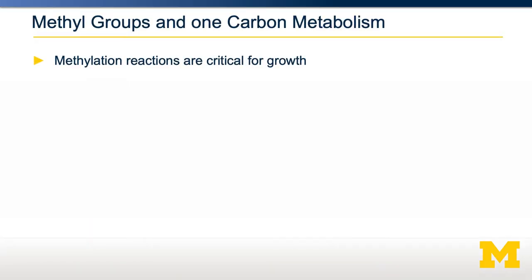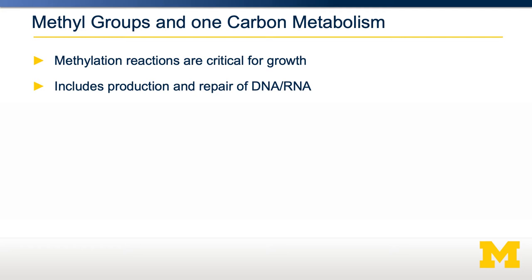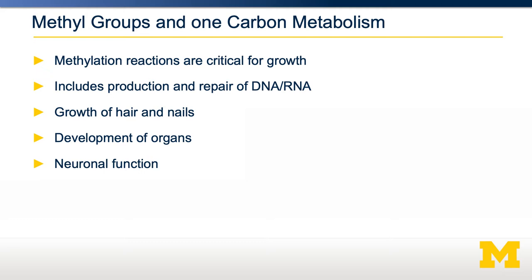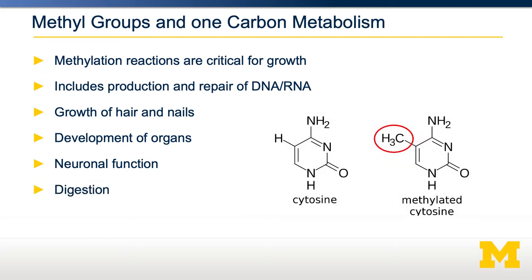Several reactions involve transferring a methyl group from one chemical to another. These methylation reactions are critical for cellular growth and development. There's a large number of targets of methylation, including DNA and RNA, development of hair, nails, and other organ systems, and they're critically important for both neuronal function and digestion. Shown here on the right is an example of a methylation reaction where a cytosine is modified by methylation.